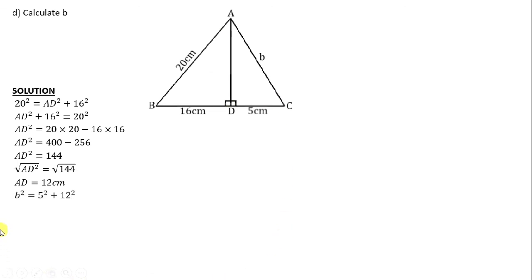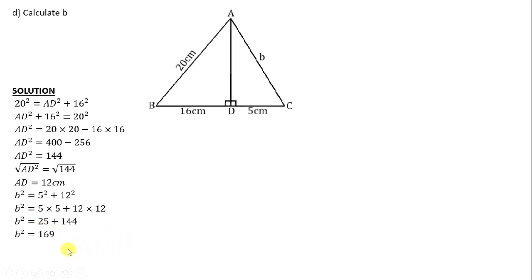We use 12 and 5 to find b. So b squared is equals to 5 squared plus 12 squared, since b in the other triangle is the hypotenuse. Multiply 5 by itself twice to get 25; multiply 12 by itself twice to get 144. So we have 25 plus 144. Adding 25 plus 144 gives 169. So b squared is equals to 169. We introduce the square root on both sides. Which number multiplied by itself twice gives 169? 13. Therefore b is equals to 13 centimeters.